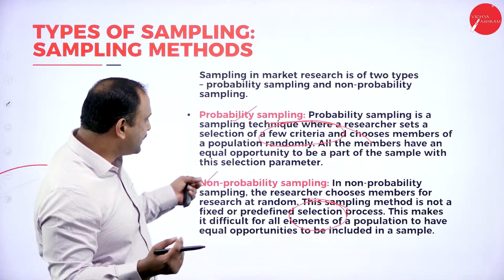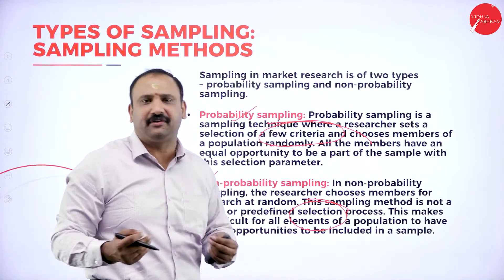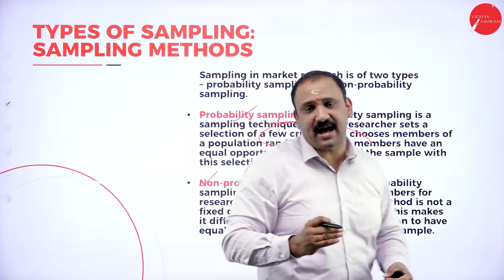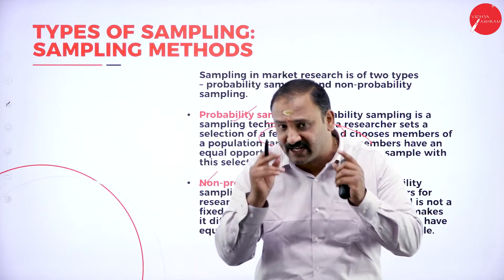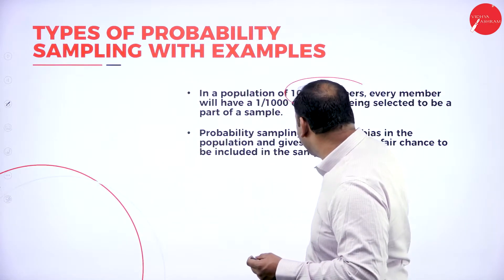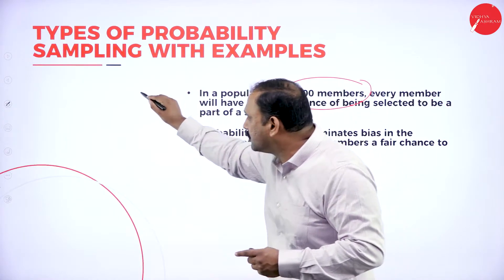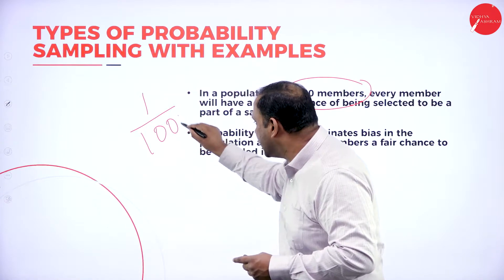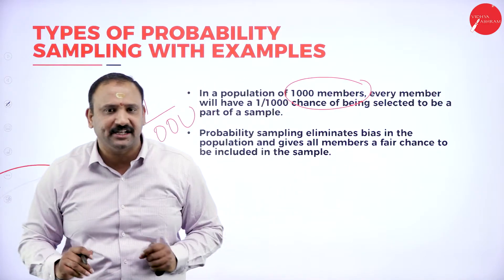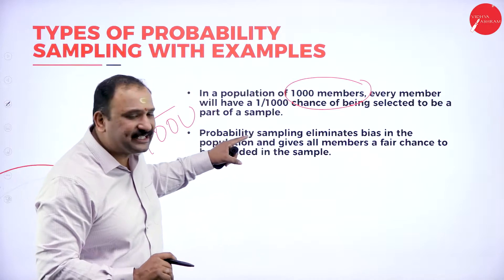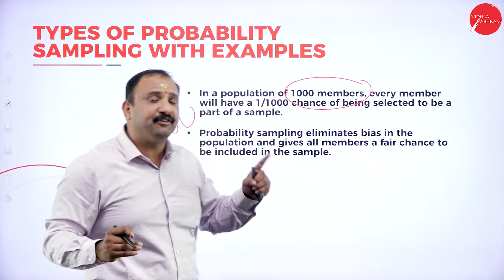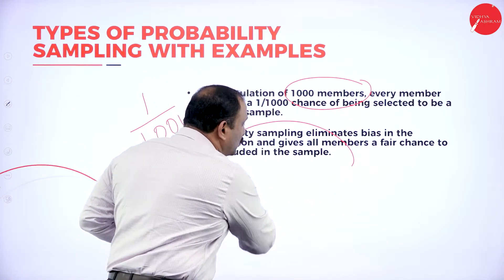Probability sampling is always based on a population chosen randomly using some statistical method, and all selected members will have an equal opportunity. In a population of 1,000 members, every member will have a chance of 1 in 1,000 to become part of the sample. The biggest advantage of probability sampling is that it eliminates bias — it ensures every member gets a fair chance to be included in the sample.